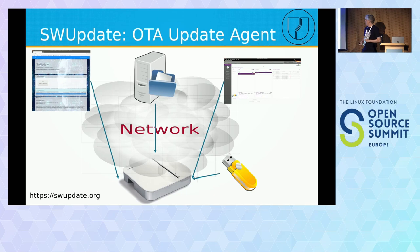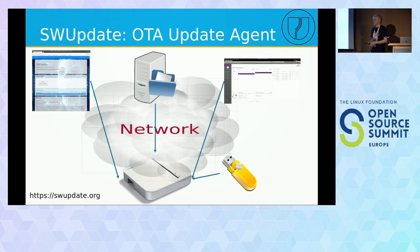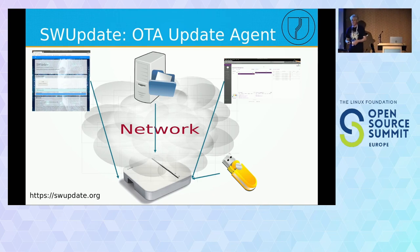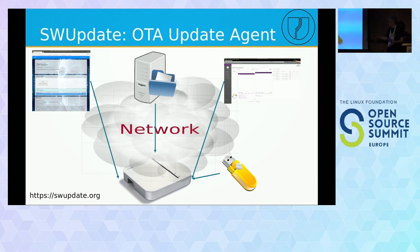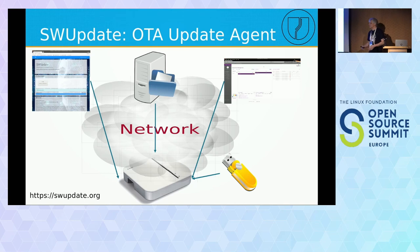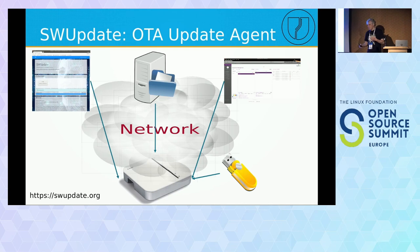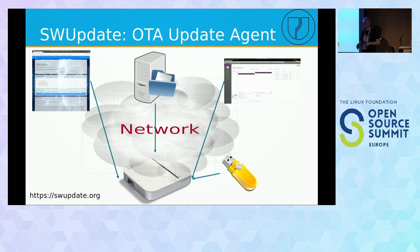An overview about SW Update: it is an update agent integrated into your software, part of your distribution, with different ways to update a system. It has an integrated web server, you can update from a cloud, connect to a fleet management server or do a local update. There are security features — software is signed, can be encrypted. SW Update is not fixed to one strategy; one common strategy is symmetric, or AB/dual-copy, and the focus for incremental update is this strategy.